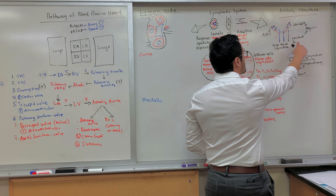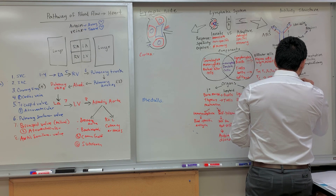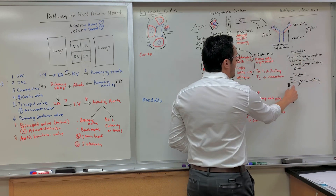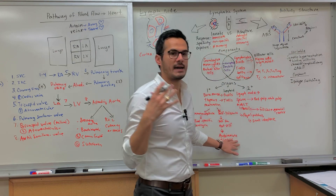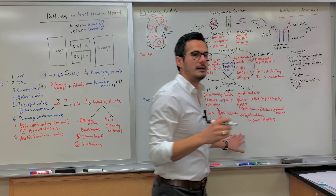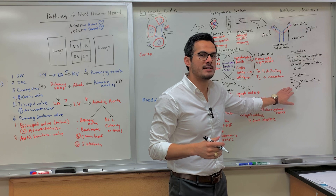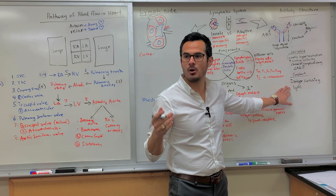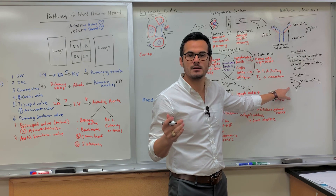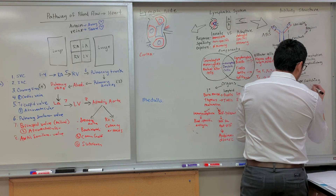The next thing that can happen occurs within the constant region — it's called isotype switching. The isotype is what gives the antibody its identity: IgM, IgA, IgG, and so on. Different immunoglobulins have different functions, so we can change the isotype for one that's specific to the pathogen present. For isotype switching, we can change from IgM to, for instance, IgG.